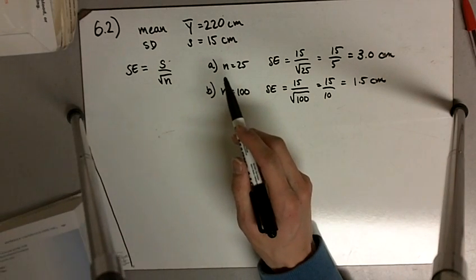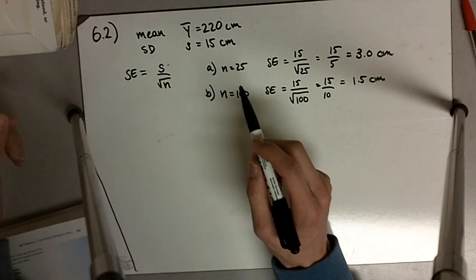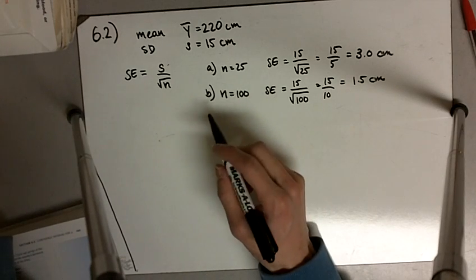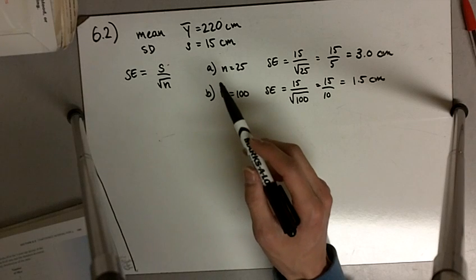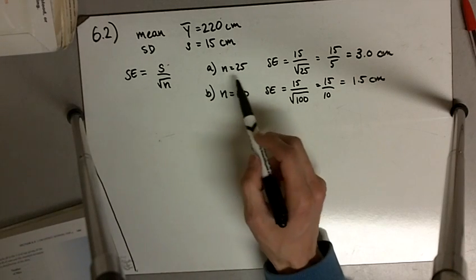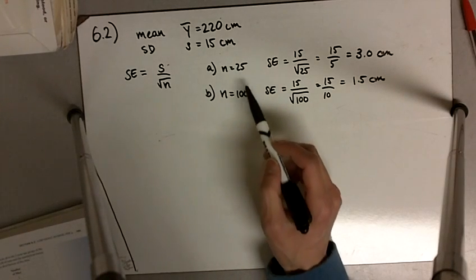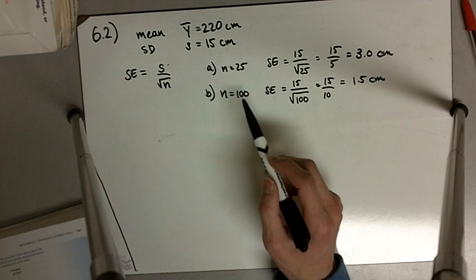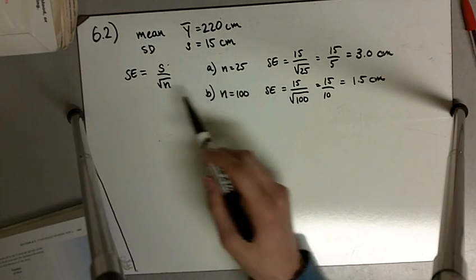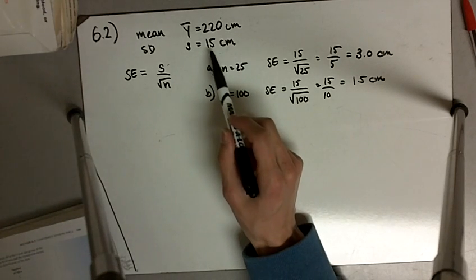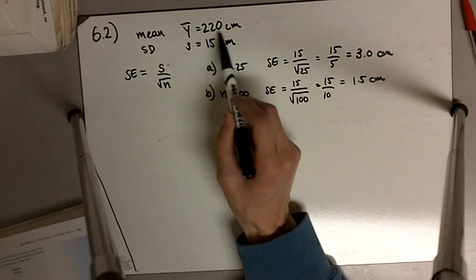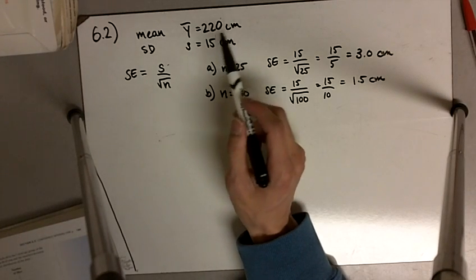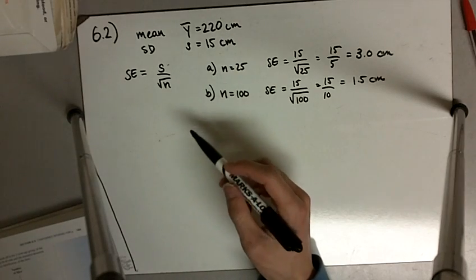And again, the standard deviation talks about how much dispersion or what the spread looks like within the data, within our sample of either 25 corn plants or 100 corn plants. But the standard error tells us how much we expect our mean, our sample mean, to differ from the actual population mean.